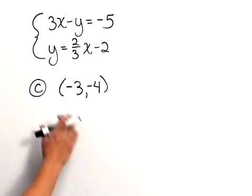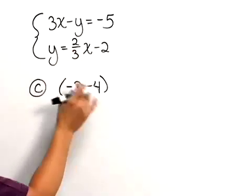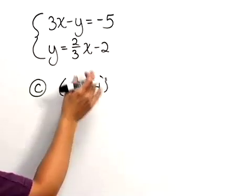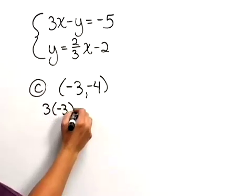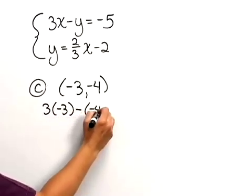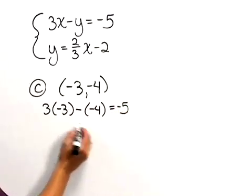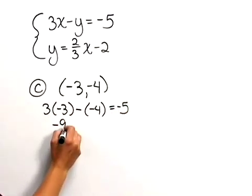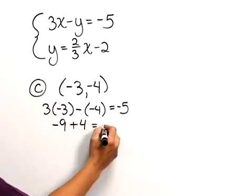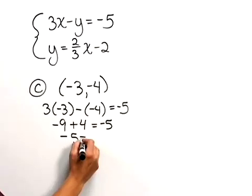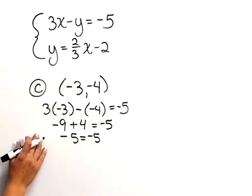For part c let's check if negative 3, negative 4 is a solution. We're going to get 3 times negative 3 minus negative 4 equals negative 5. This ends up being negative 9 plus 4, which gives us negative 5 equaling negative 5. This first equation worked fine.